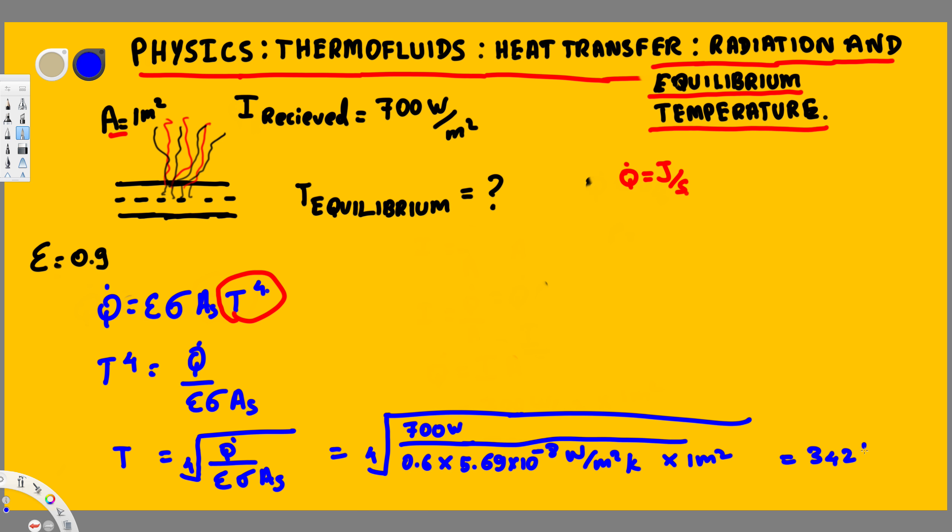If you solve for this one you should get 342 Kelvin. If you convert this one into degree Celsius, that's going to give us 69 degree Celsius. So that's going to be the equilibrium temperature we are going to have right here.